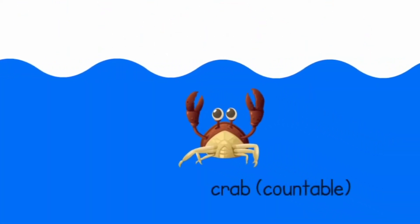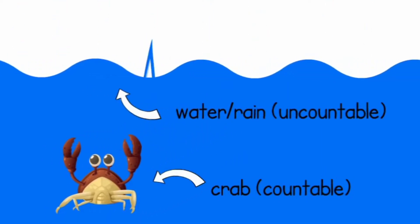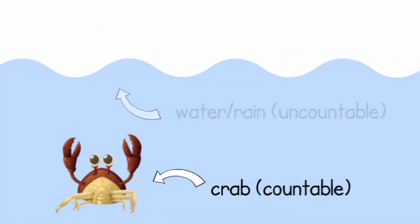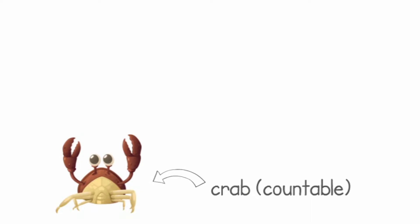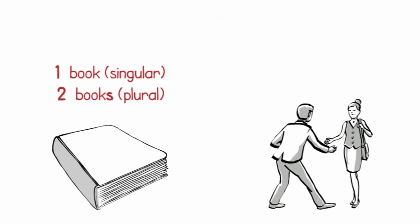Some nouns are countable, some uncountable, and some nouns can be both. So let's start with what you know. Countable nouns refer to things that can be counted, such as books or chairs or people, and they have both singular and plural forms.